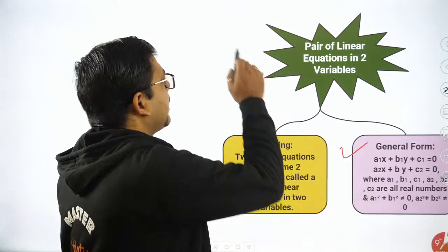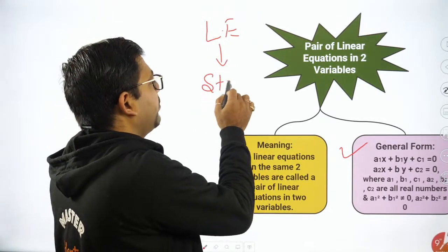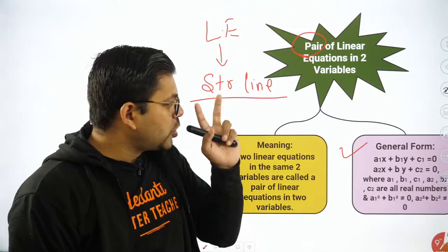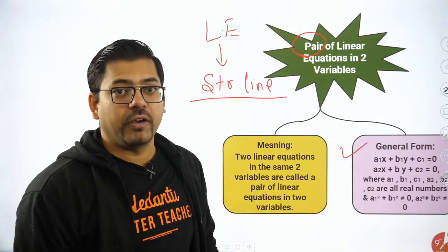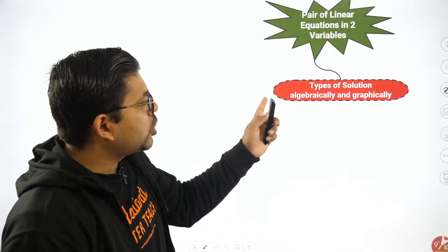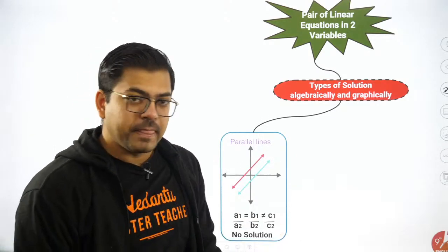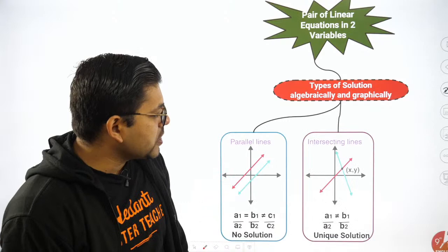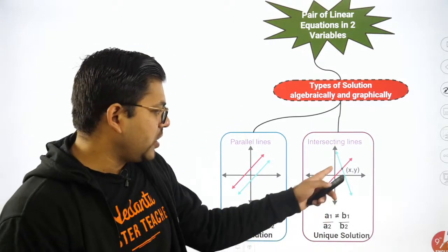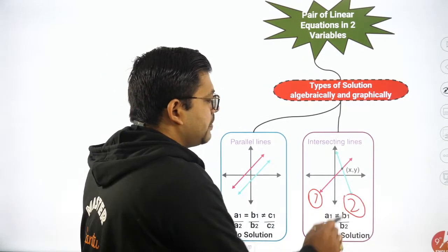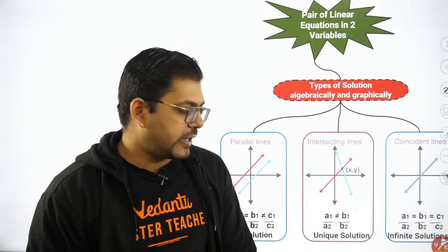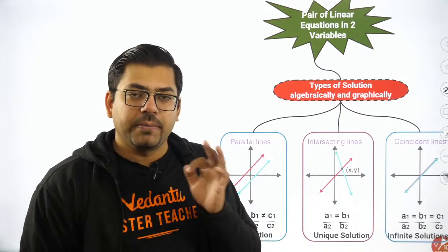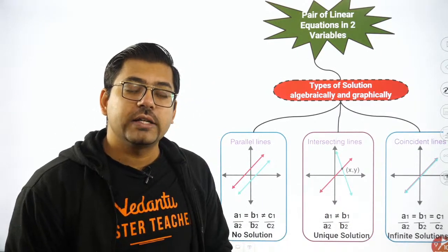A linear equation has a straight line graph. When we say pair of linear equations, we're talking about two straight lines. Two straight lines can show different behaviors graphically — they can be parallel lines not intersecting each other at any point, they could be intersecting lines meeting at one point, or they might be coincident lines lying one upon the other.